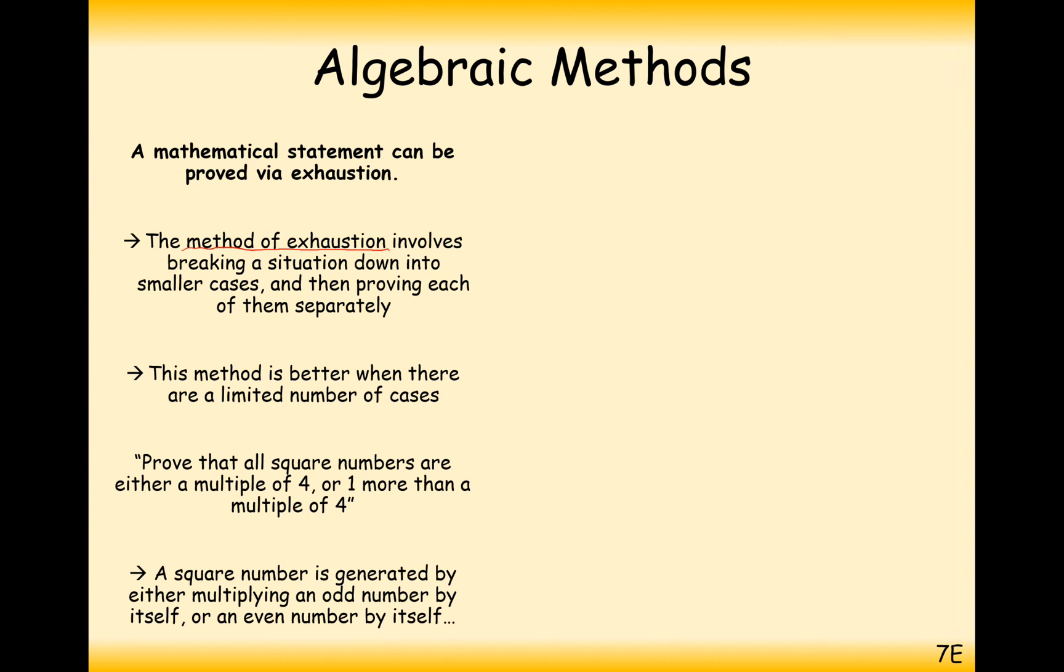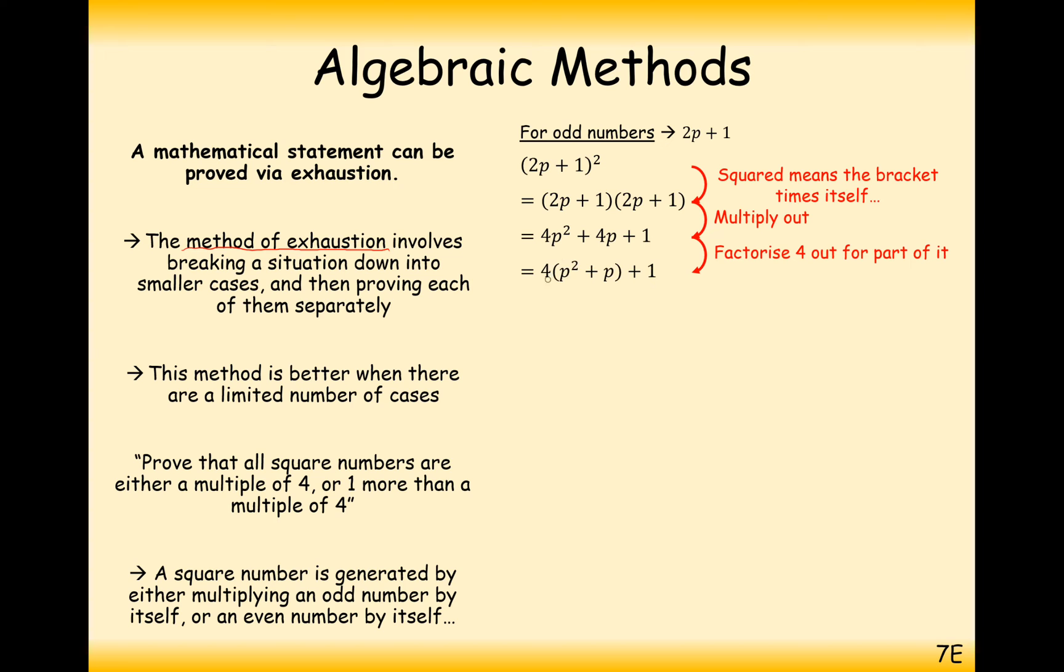So what we'll do here is we'll look at the different two situations of an odd number being squared and an even number being squared. For example, if we're squaring an odd number, and an odd number can be written as 2p plus 1, then squaring that and expanding the brackets, we get 4p squared plus 4p plus 1. We can clearly see here that we've got 4 times something, add 1. So in this odd case, it's going to be the example of one more than a multiple of 4.